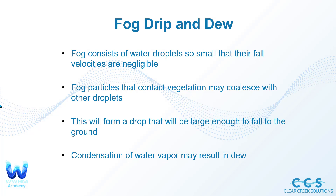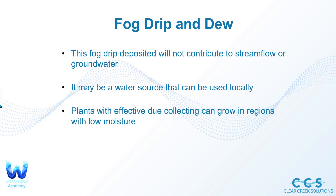Now let's talk about fog drip and dew. Fog consists of water droplets so small that their fall velocities are essentially negligible. Fog particles that contact vegetation may coalesce with other droplets to form a drop large enough to fall to the ground. As you can visually observe, fog doesn't look like it's falling — it just exists in the atmosphere — but once droplets coalesce they fall. Condensation of water vapor may then result in dew.